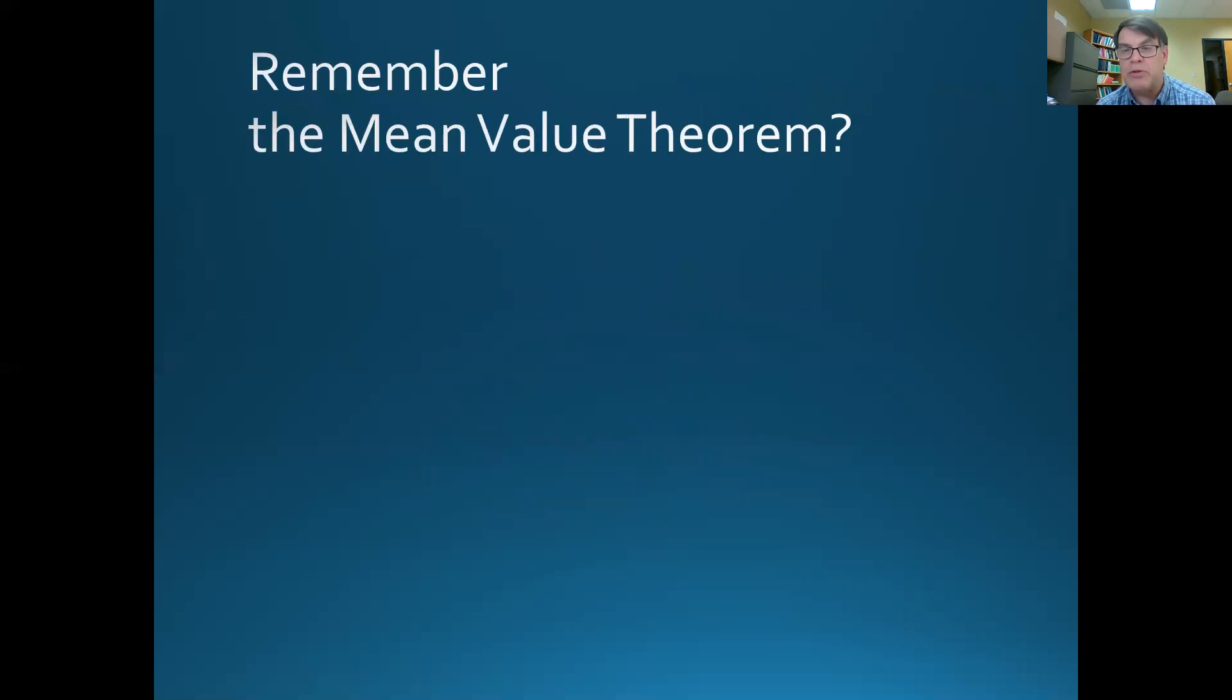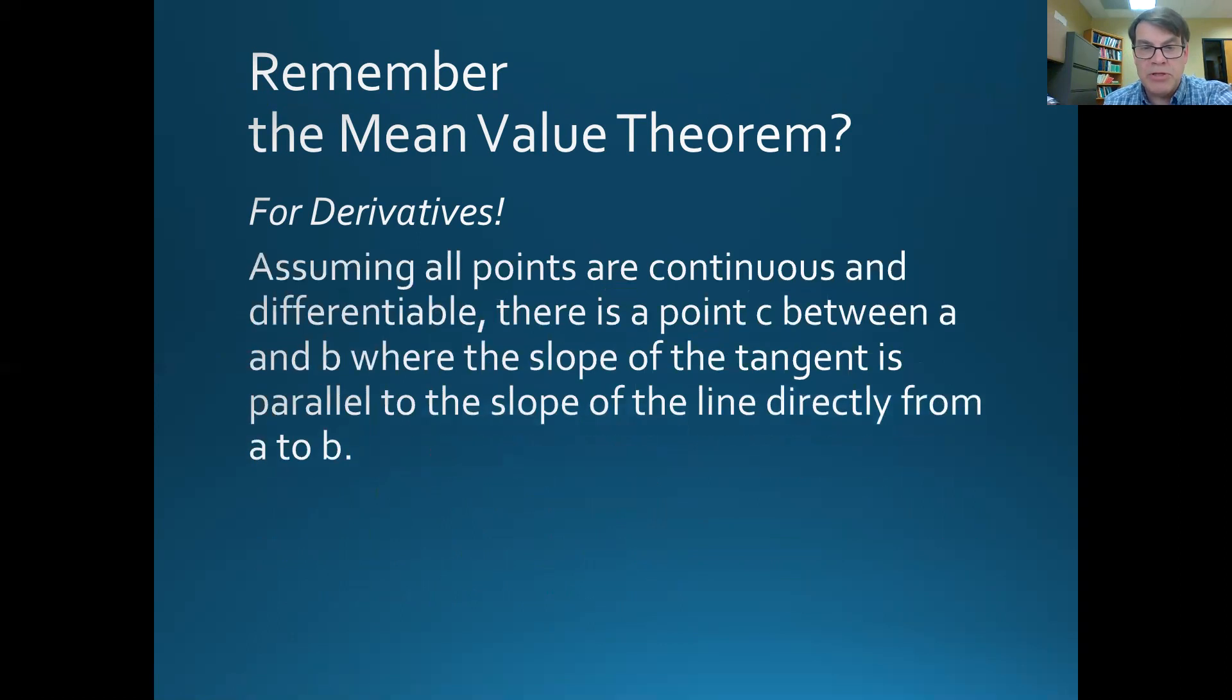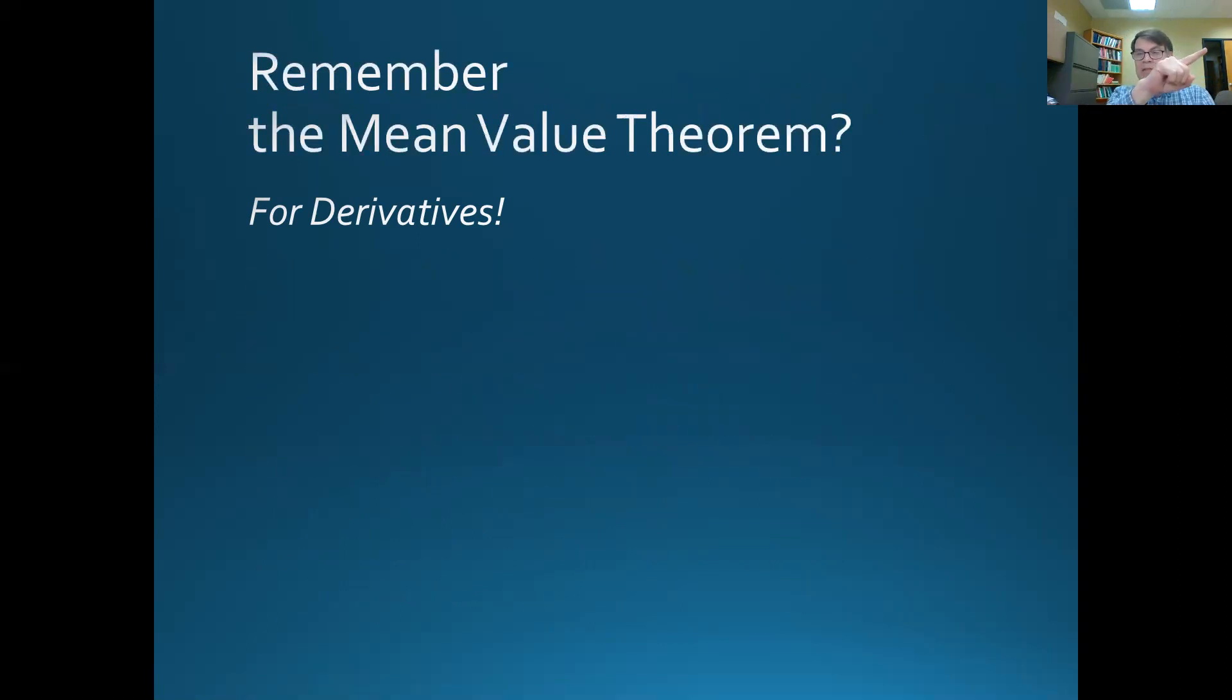Now, just to remind you of the mean value theorem for derivatives, it basically was telling you this. That, again, assuming that on this function, that all the points are continuous and it's differentiable at all these points, then if I have a part of a function from point a to point b, then somewhere along that continuous differentiable function, there is going to be a point c where the tangent at that point is going to be parallel to the line going straight from b to a.